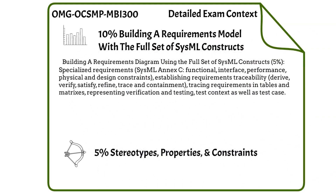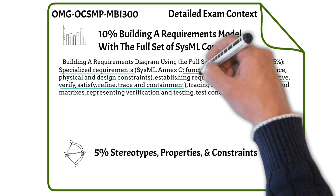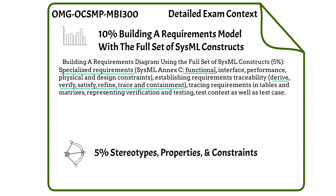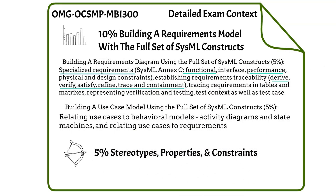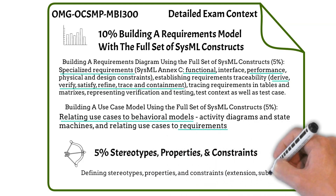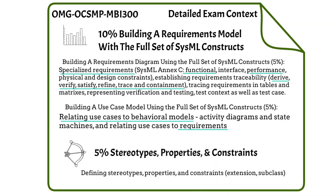When building a requirements model with the full set of SysML constructs, you need to know about specialized requirements and their relationships — for example, a functional requirement attaches to a behavioral element such as an activity, and a performance requirement connects to a value property. Use cases and connecting them to behavioral models like activity diagrams, state machines, and requirements will also be on the exam. There will be one or two questions about stereotypes, properties, or constraints.